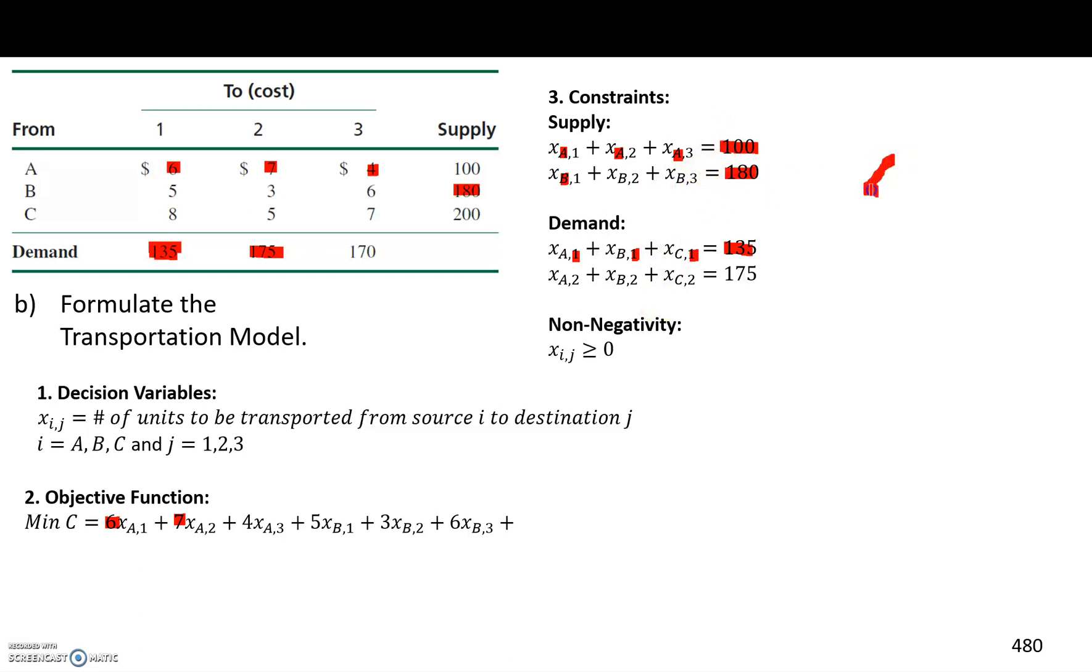And the way it works is that whichever of the demand or the supply is greater, that's the one that gets this inequality sign, because that is the one that will not completely be satisfied.